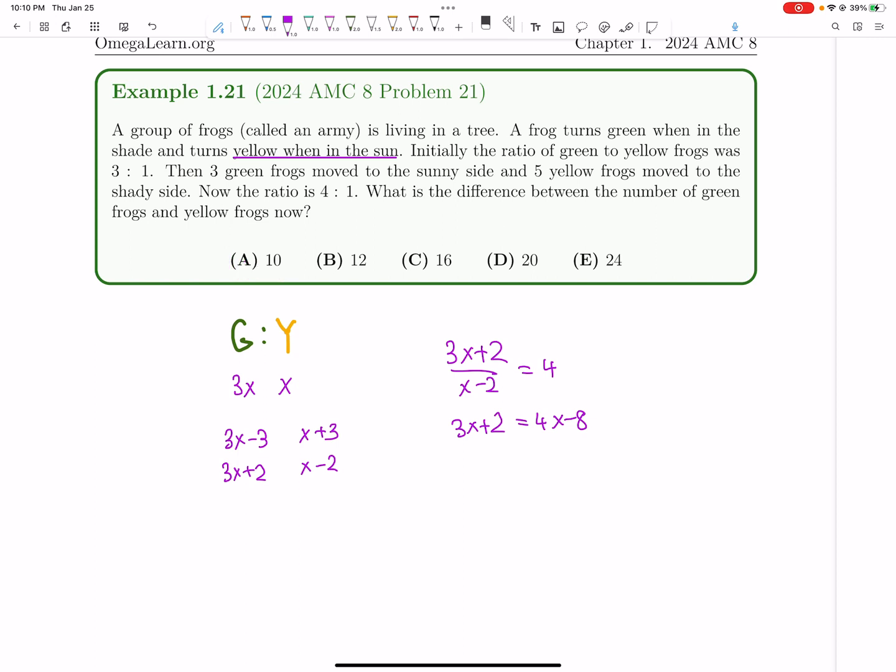But wait, I was about to circle 10. What is the difference between the number of green frogs and yellow frogs now? I almost just put the value of x, but remember to read the question carefully.